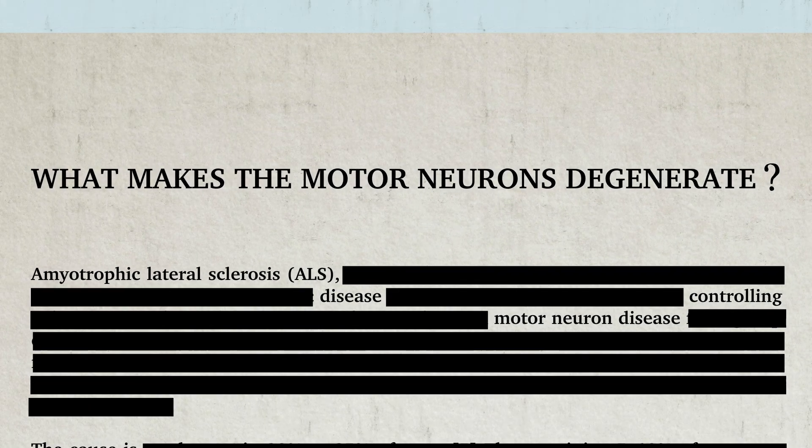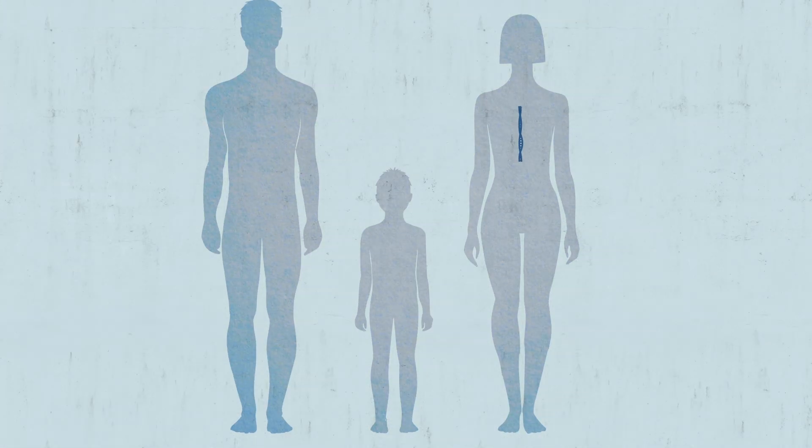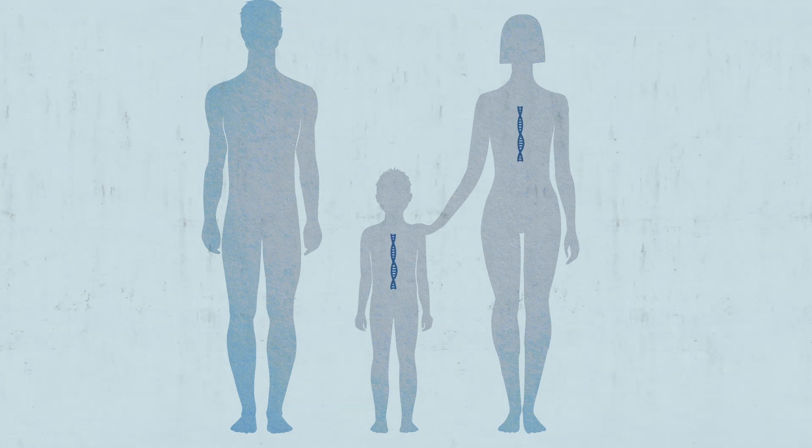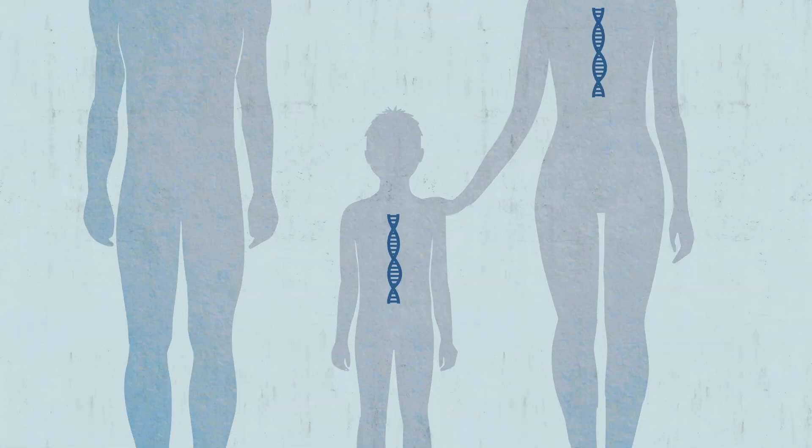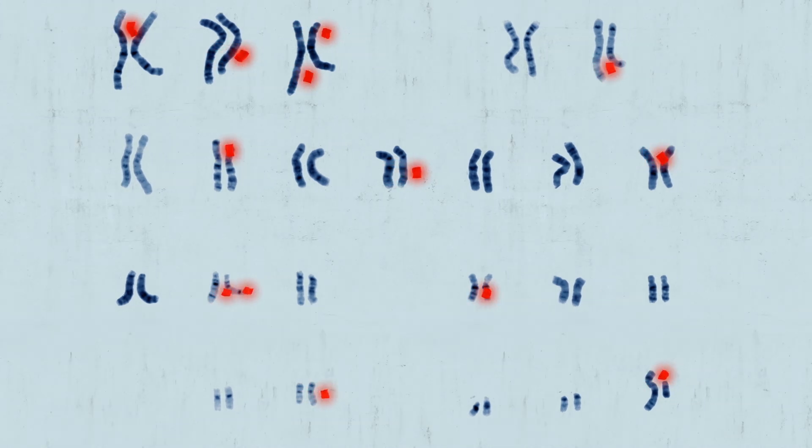Precisely what makes the motor neurons degenerate is the prevailing mystery of ALS. In hereditary cases, parents pass genetic mutations onto their children. Even then, ALS involves multiple genes with multiple possible impacts on motor neurons, making the precise triggers hard to pinpoint.